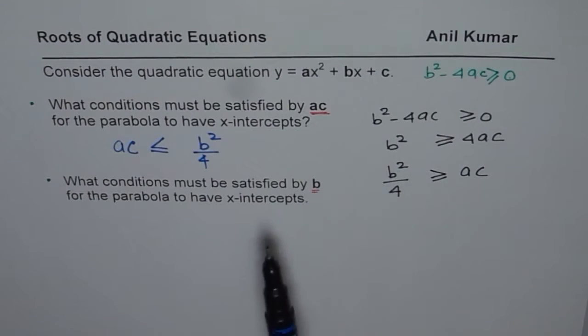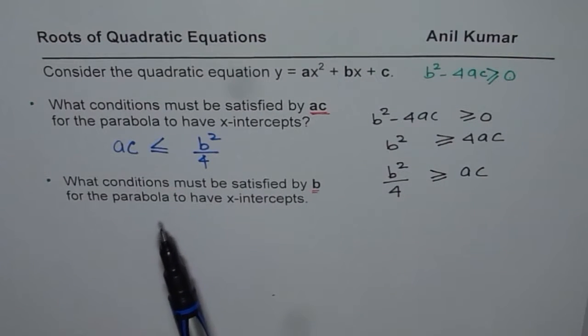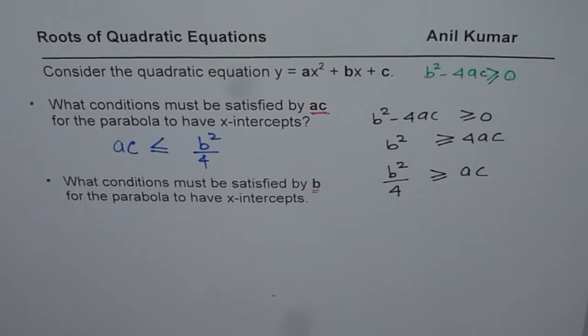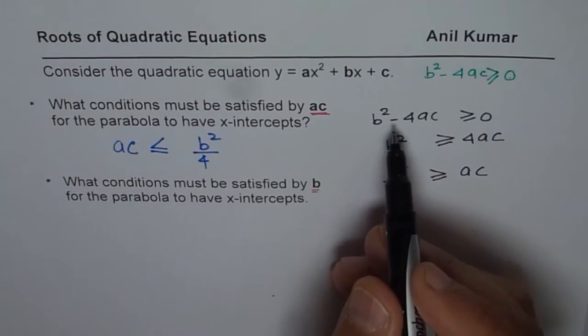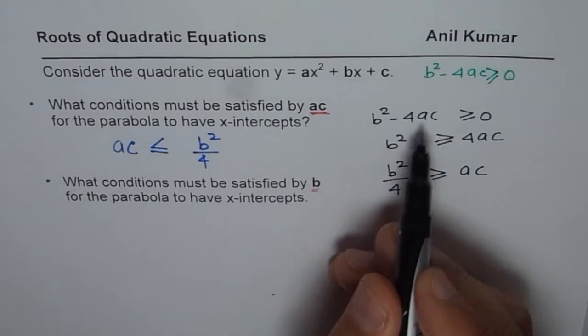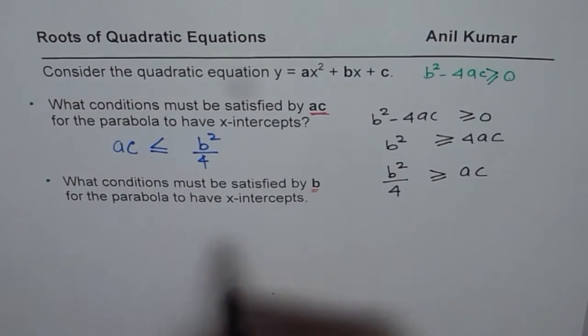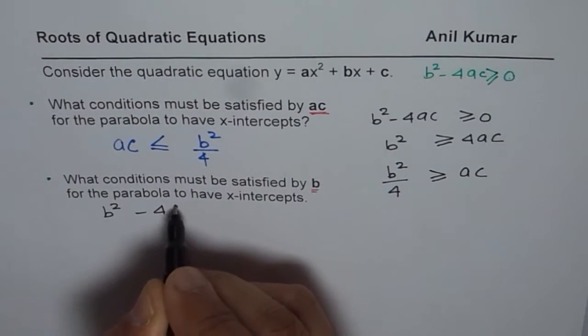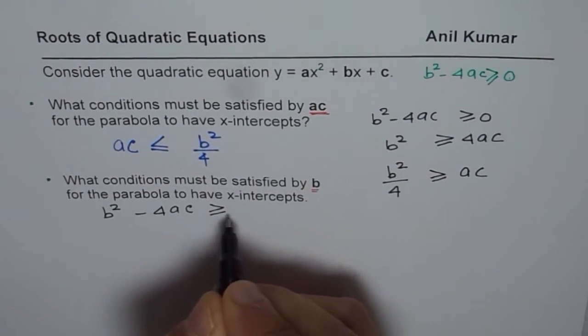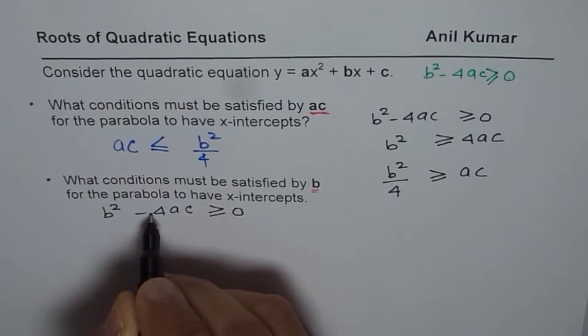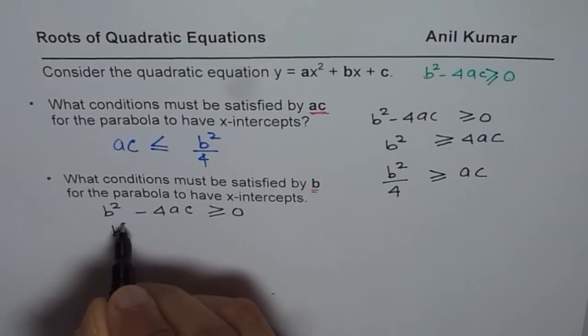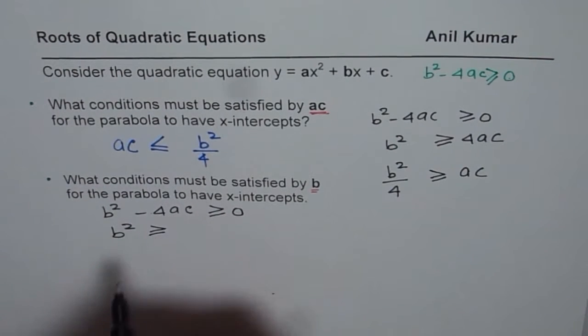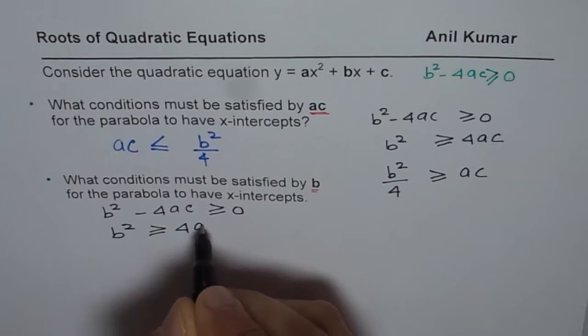You can follow the similar method and find the solution of part b. So let's do it here for part b. We'll again begin with b square minus 4ac, but this time we'll isolate b. So we have b square minus 4ac should be greater than or equal to 0. If I take 4ac on this side, then I get b square should be greater than or equal to 4ac.